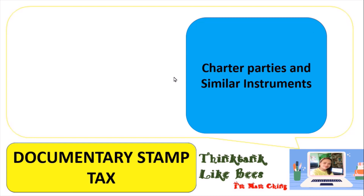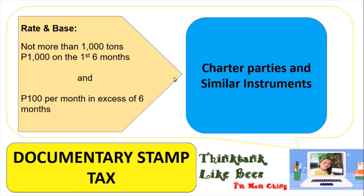For charter parties and similar instruments, if the vessel is not more than 1,000 tons, you pay 1,000 pesos for the first 6 months, and 100 pesos per month in excess of 6 months. For example, if the instrument covers 1 year: the first 6 months is 1,000 pesos; the remaining 6 months is 6 multiplied by 100 pesos equals 600 pesos; so 1,000 plus 600 equals 1,600 pesos in documentary stamp tax.